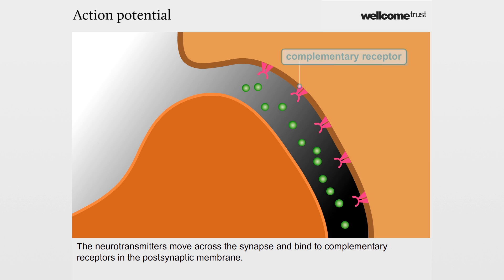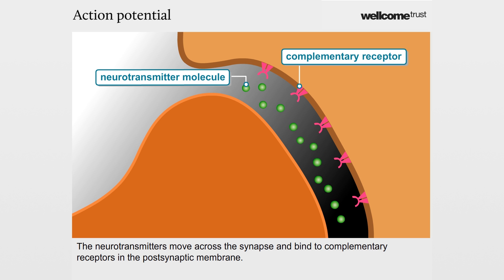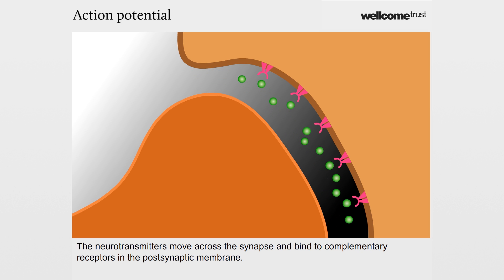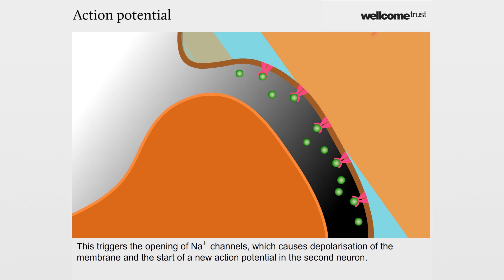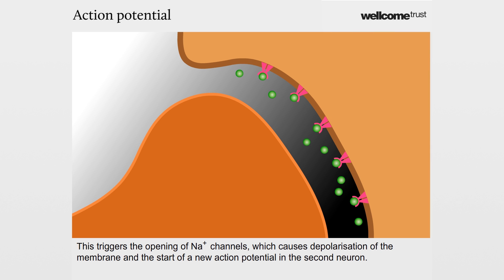The neurotransmitters move across the synapse and bind to complementary receptors in the postsynaptic membrane. This triggers the opening of sodium channels, which causes depolarisation of the membrane and the start of a new action potential in the second neuron.